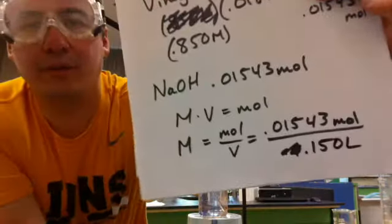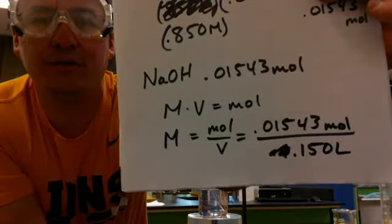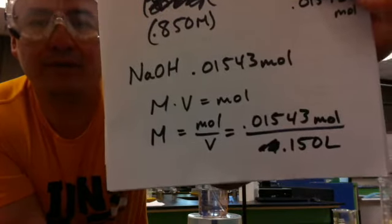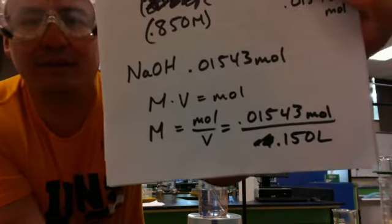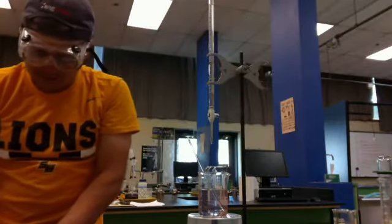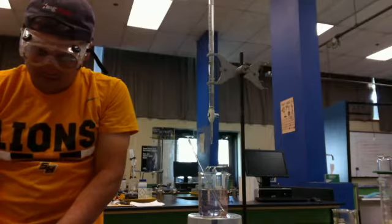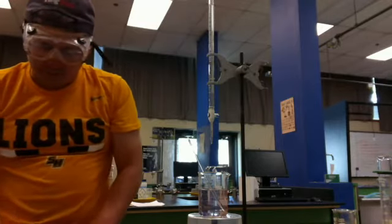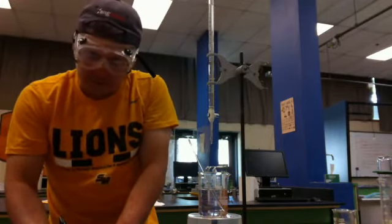So I get 0.01543 moles divided by 0.150 liters. That's 150 milliliters that I titrated. And I'll divide those. I get 0.103 with sig figs correct.